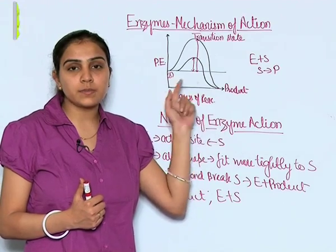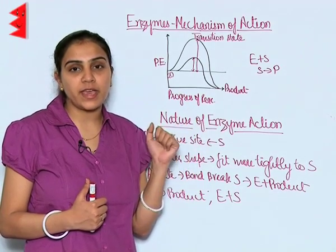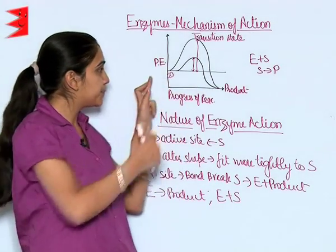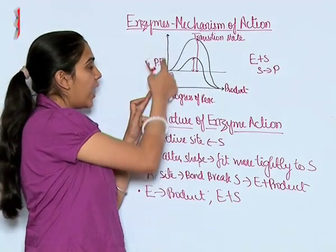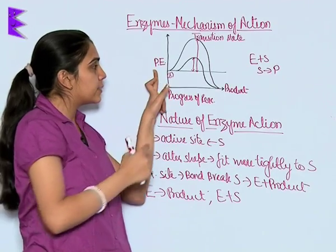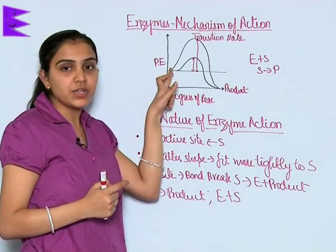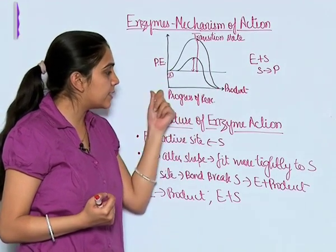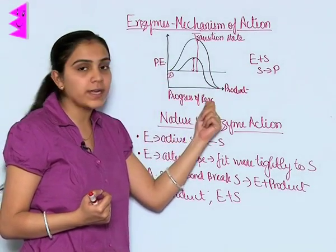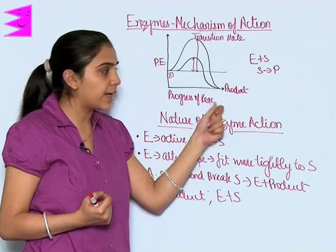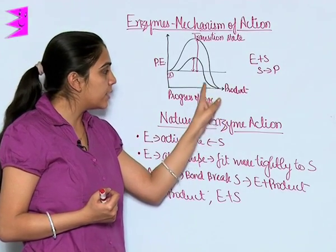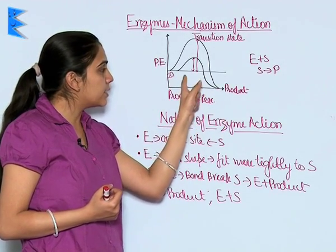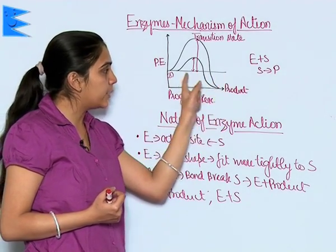Let us understand this Mechanism of Action through this graph. On the y-axis is potential energy, and on the x-axis is the progress of the reaction. This curve represents the product, and this represents the substrate.